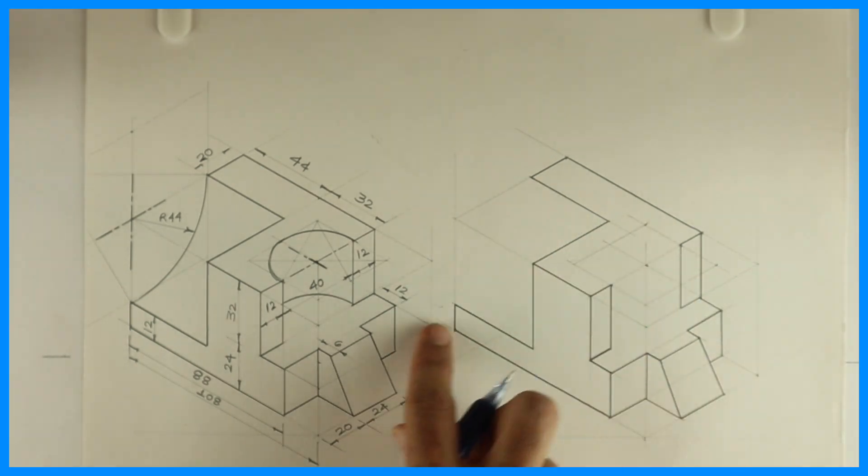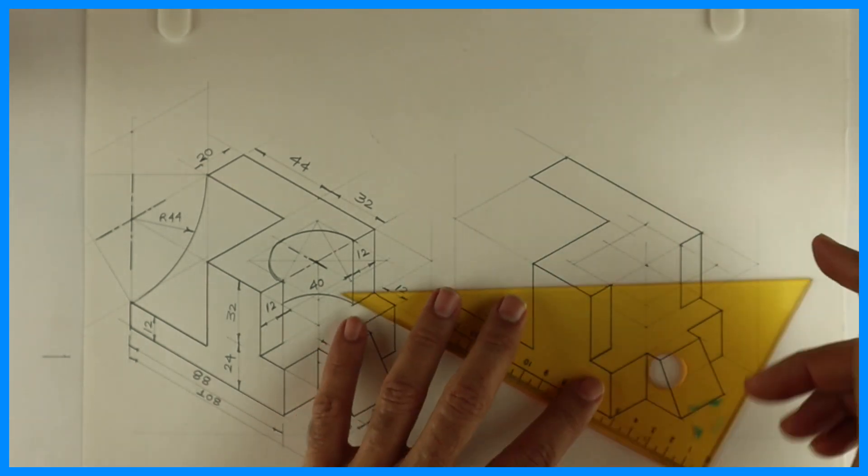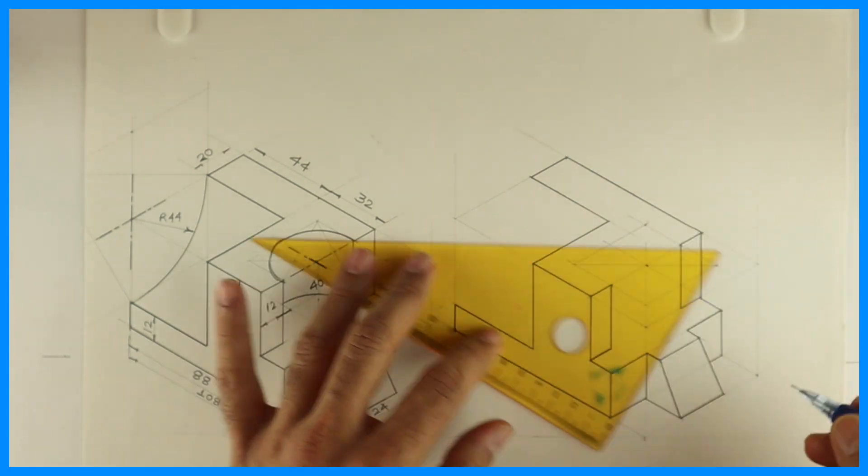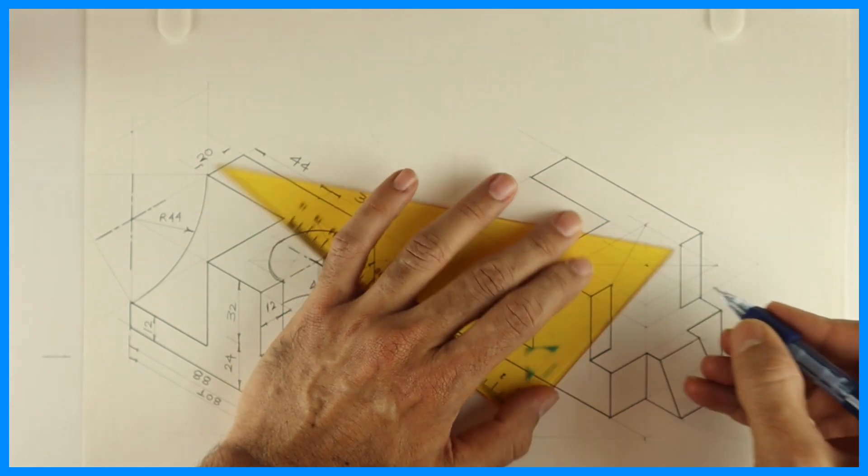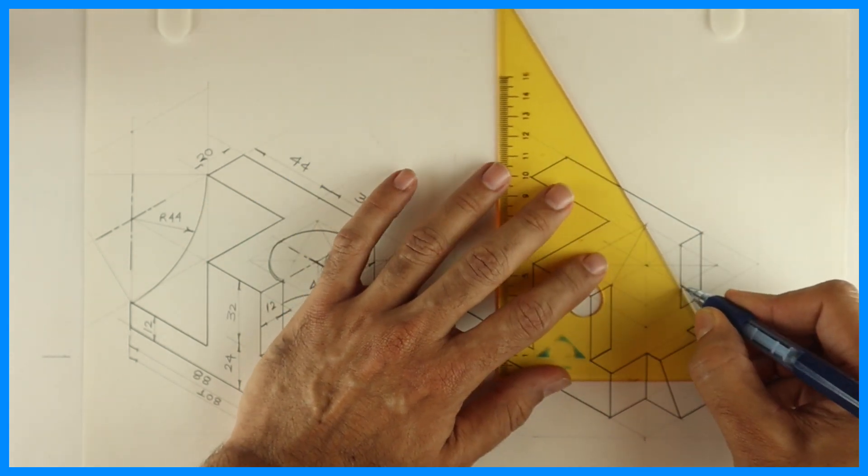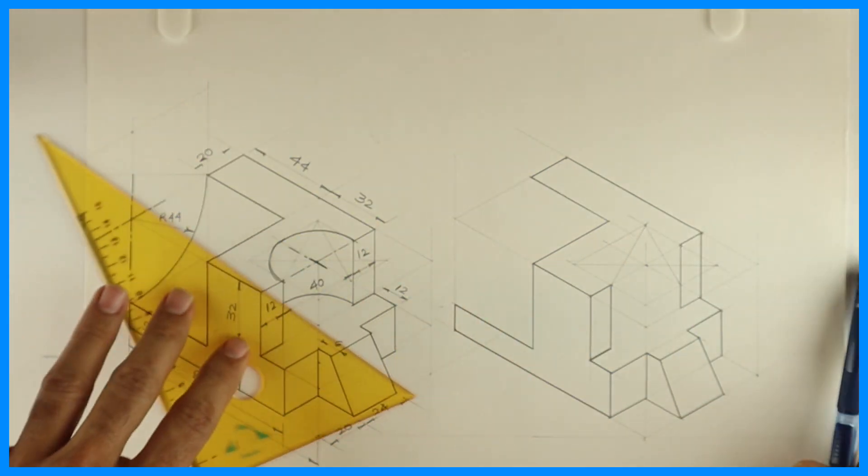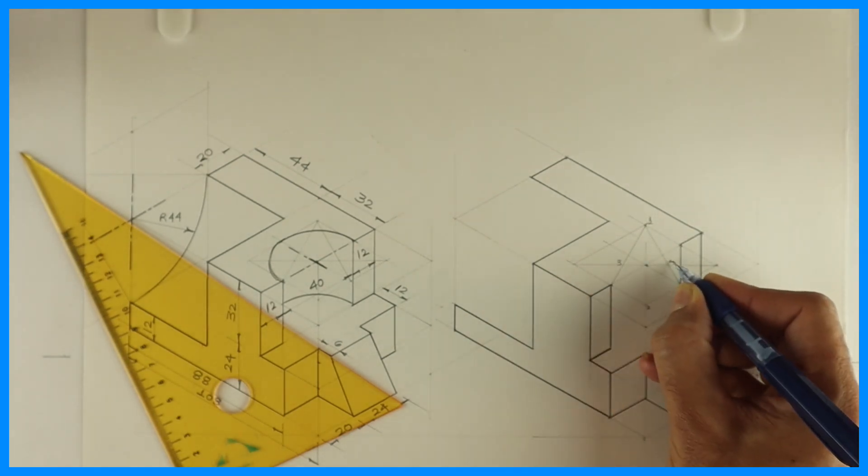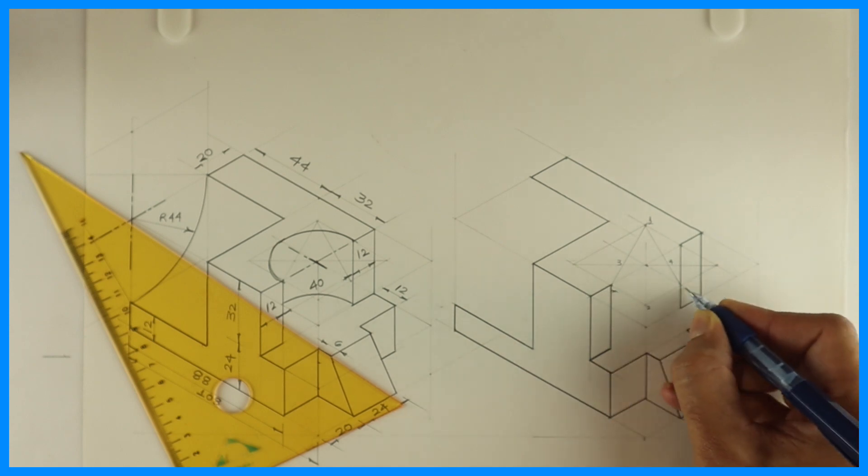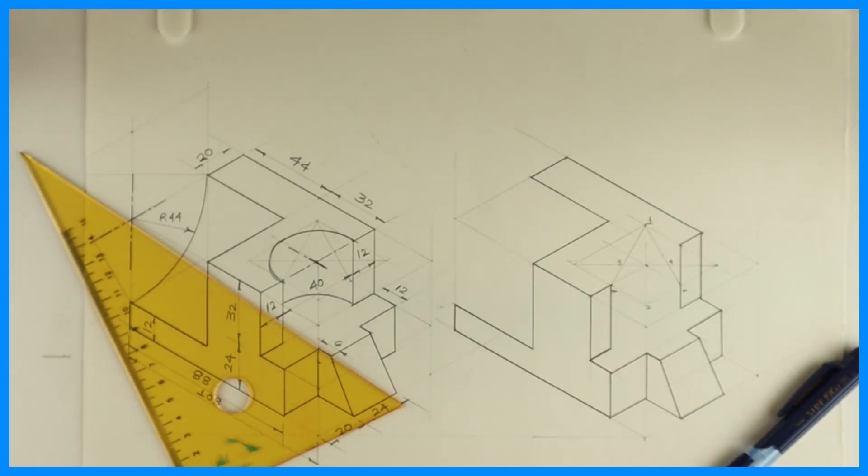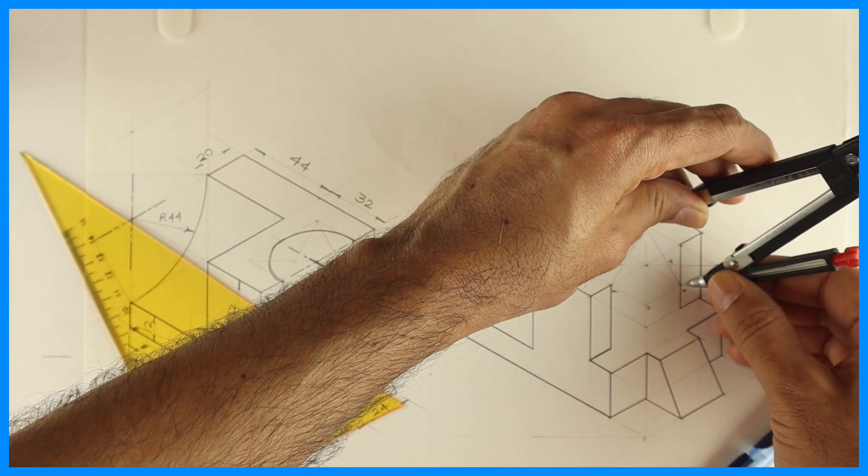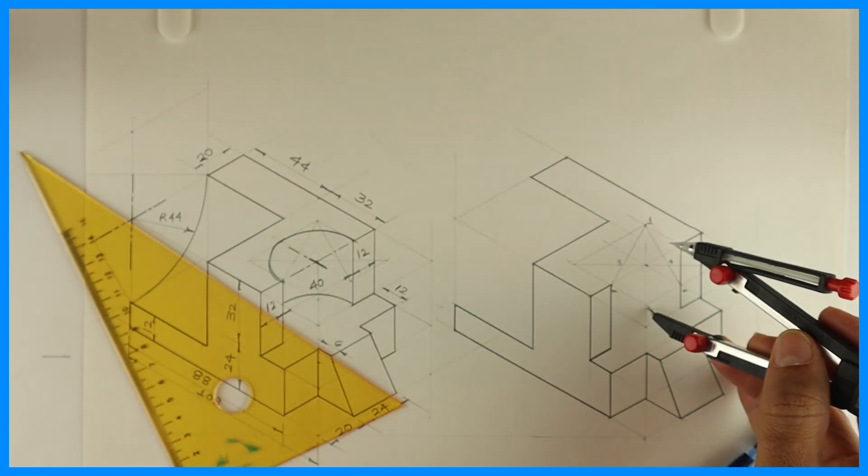Now we need to draw a circle at both these places. First we'll draw this. We'll draw isometric circle by four-center method. So we'll join longest diagonal and we'll join opposite midpoint with that corner where angle is more than 90. This is 1, 2, 3 and 4. This is M, M. So 1 to M we can rotate, but we don't require.